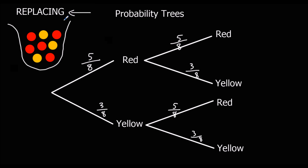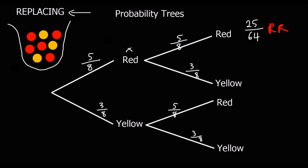Now let's look at the combined events. Whenever we go across the tree — whenever we go red then red — we multiply the probabilities. So the chance of getting red then red is five out of eight times five out of eight. Five times five is twenty-five, and eight times eight is sixty-four. So the chance of getting red then red is twenty-five out of sixty-four.